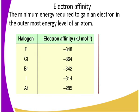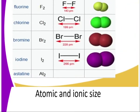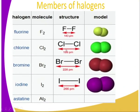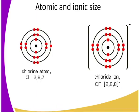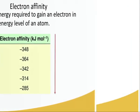Astatine is the last member of the halogens. Regarding physical states at room temperature: fluorine and chlorine are gases, bromine is a liquid, and iodine is a solid. Their physical properties change down the group, and we will refer to these in the following lesson.